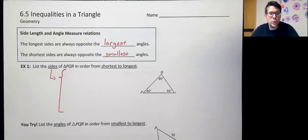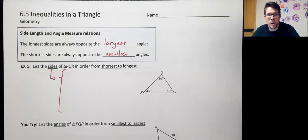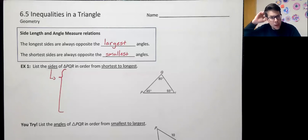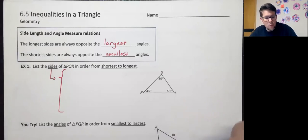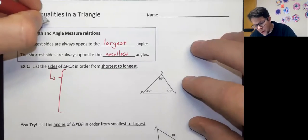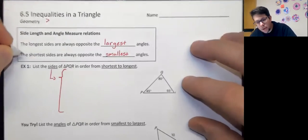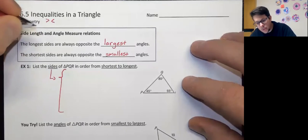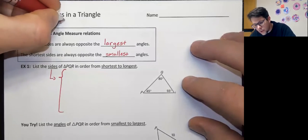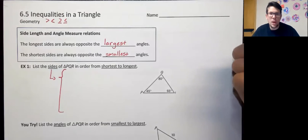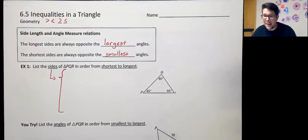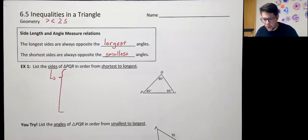Hello, everyone. Today we're going to talk about section 6-5, which is on a very clean and simple concept called the triangle inequality. The word inequality refers to symbols we've seen many times before: the greater than symbol, the less than symbol, the greater than or equal to symbol, or the less than or equal to symbol. We're going to be talking about things that are not equal to each other but have a strong relationship between each other.